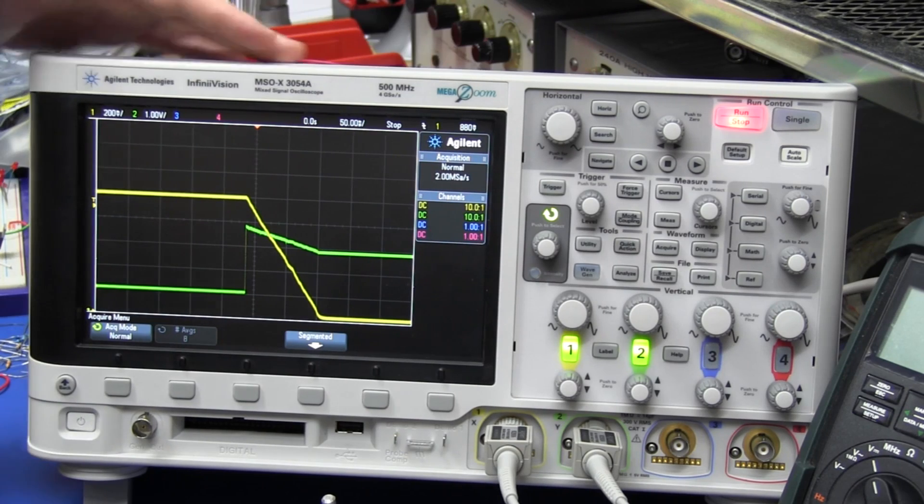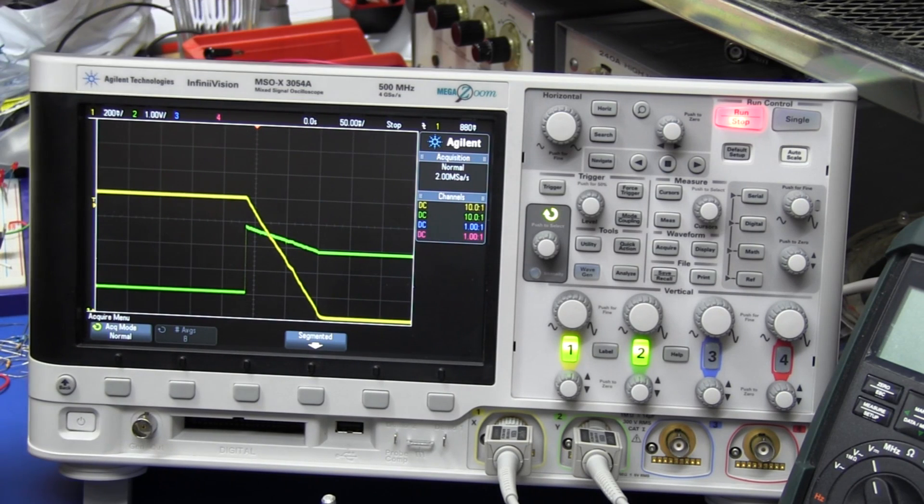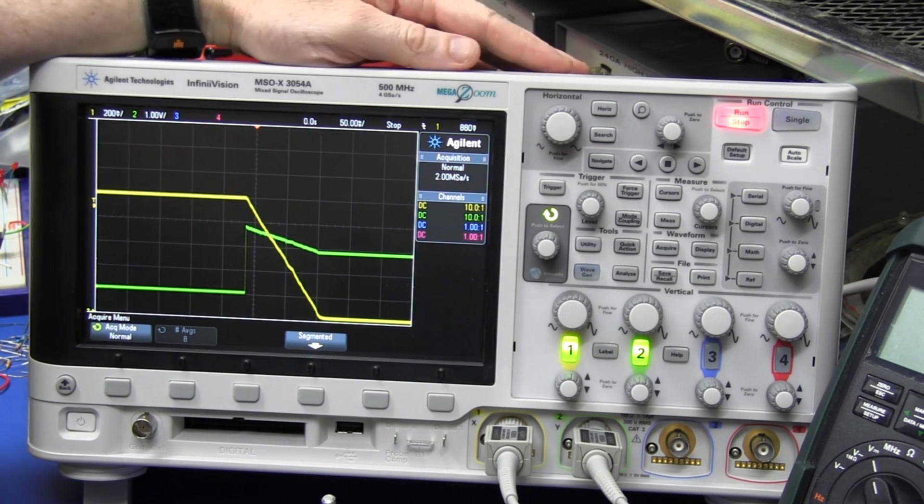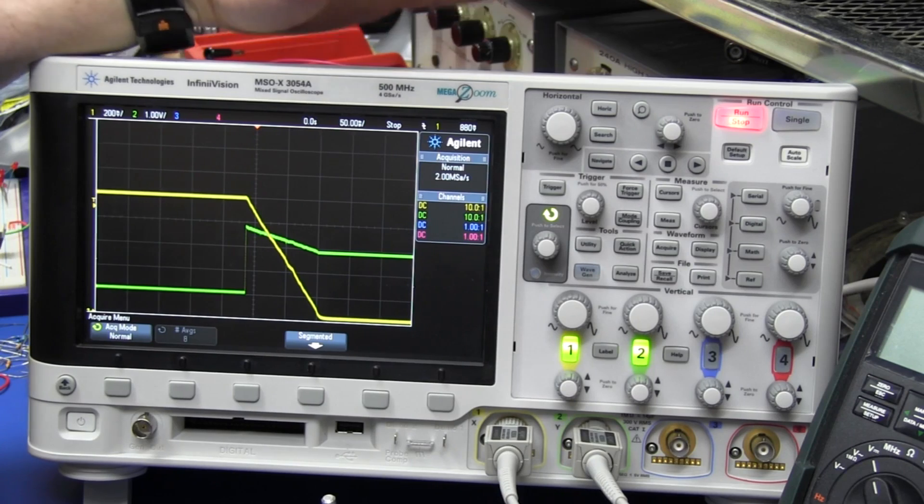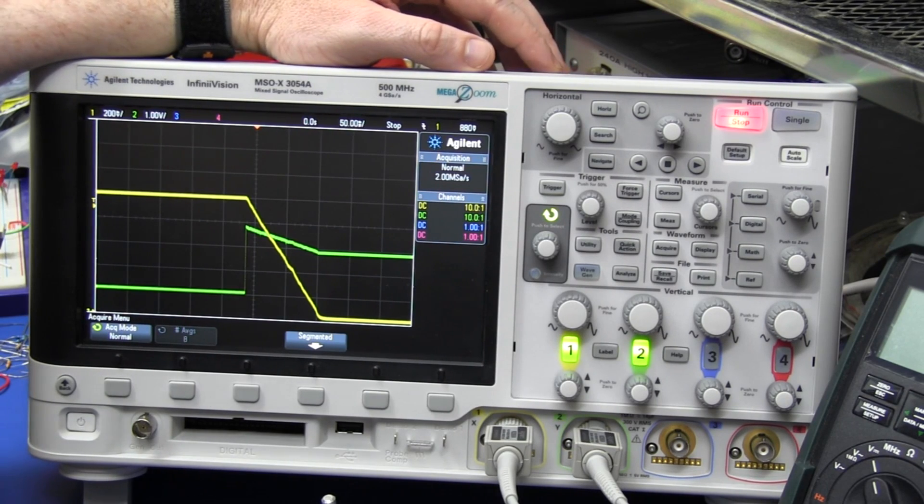Hi, I thought I'd show you a quick little trick for young players with the high resolution mode that you get in a lot of modern scopes like this. In this case it's the Agilent InfiniVision 3000X series.